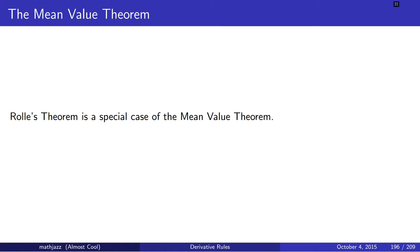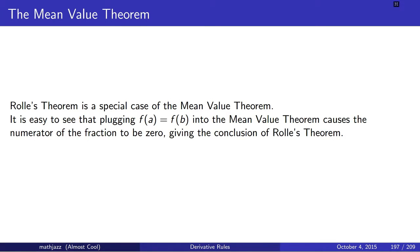Rolle's theorem is a special case of the mean value theorem. It's easy to see that if f of a equals f of b — which is the extra hypothesis for Rolle's theorem — and we look at the fraction for the mean value theorem, the numerator turns into zero. And since the numerator of the fraction is zero, the whole fraction is zero, so f prime of c equals zero in the mean value theorem if we just let f of a equal f of b.